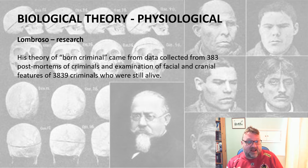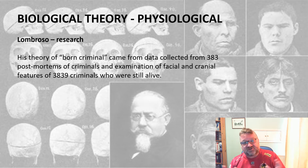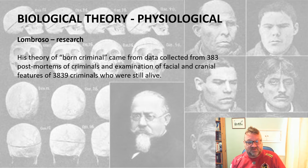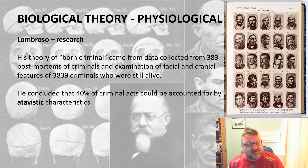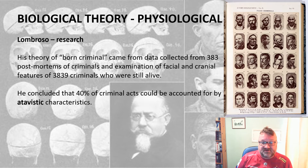His theory came about from data he collected from lots of different criminals, both living and dead. He made scrupulous measurements of facial features from 383 postmortems of criminals and 3,839 criminals who were still alive — quite a large data set of over 4,000 faces meticulously logged. His conclusion was that 40% of criminal acts can be accounted for by atavistic characteristics.